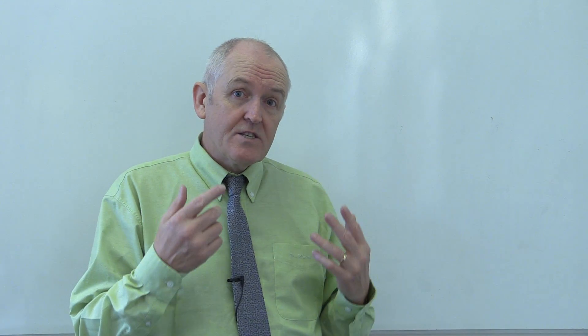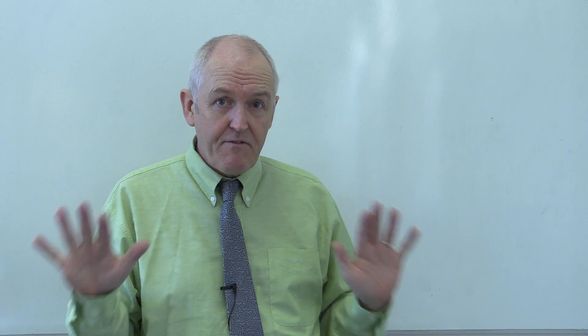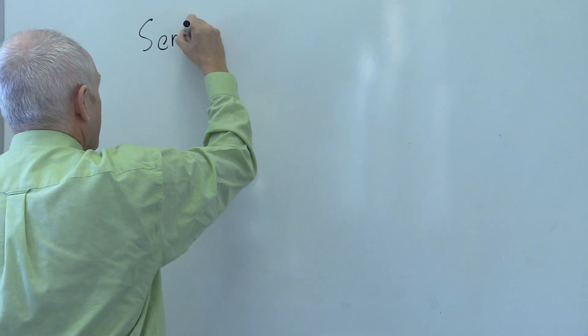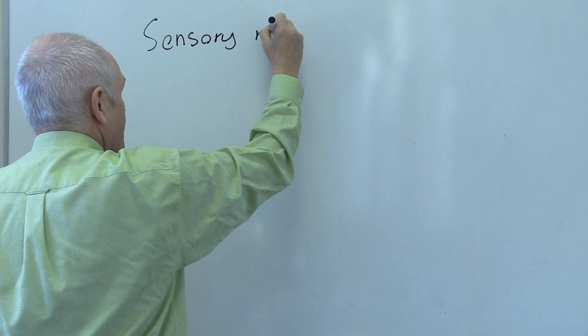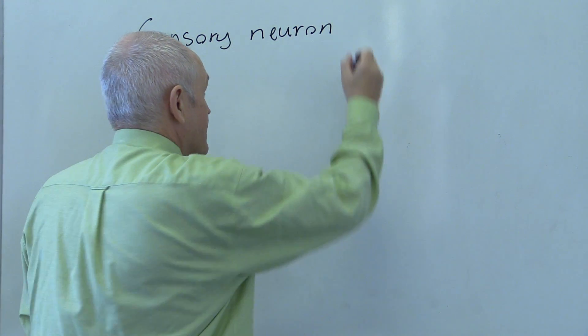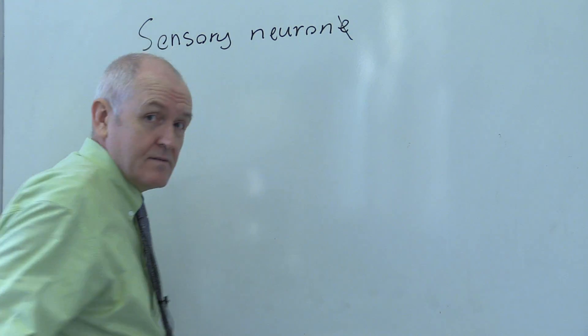We want to go on now and think about sensory neurons, and this is how we are aware of the environment. So we can see, we can smell, we can taste, we can feel, we have tactility, so that we are aware of our environment. Let's think about the neurological basis for this as we think about the sensory neurone.